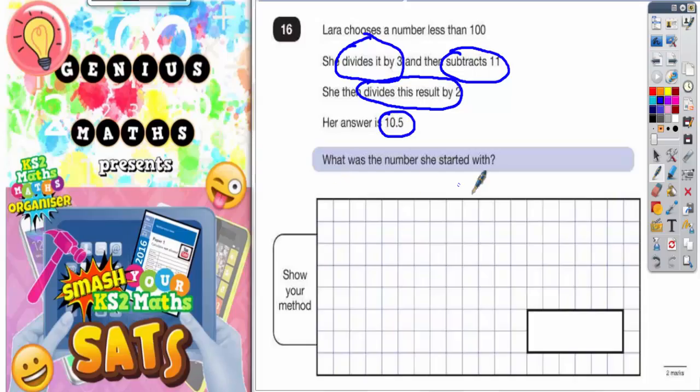What was the number she started with? The easiest thing to do here is to draw a number machine to help work it out. When she chooses the number, we're going to call that a question mark. So I'll start here with my question mark.